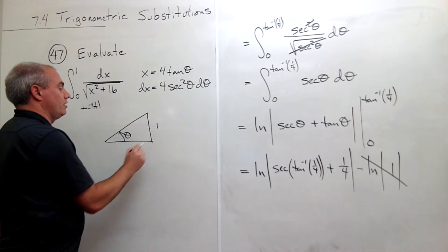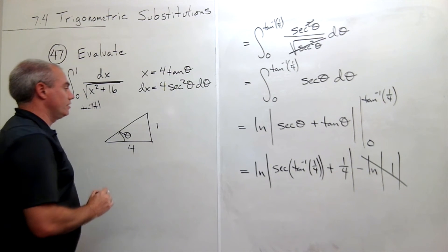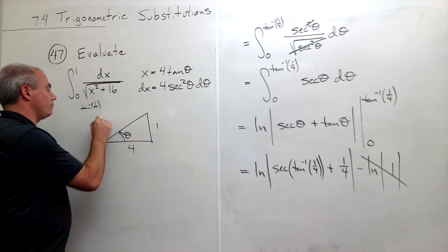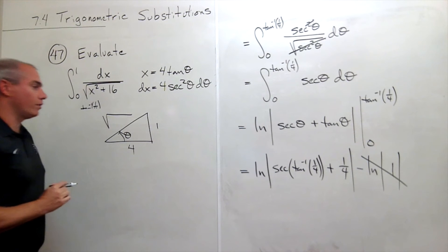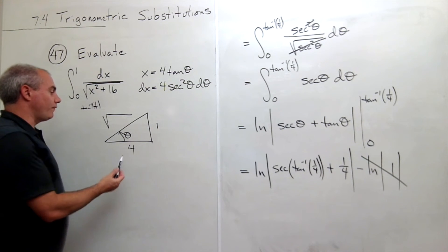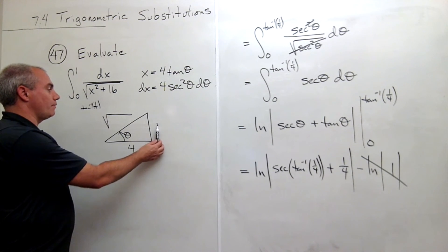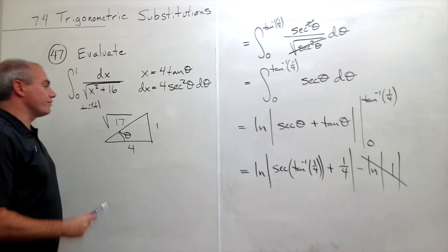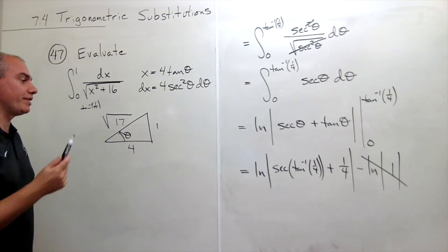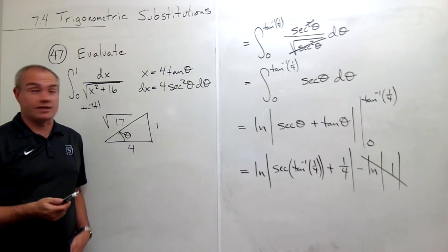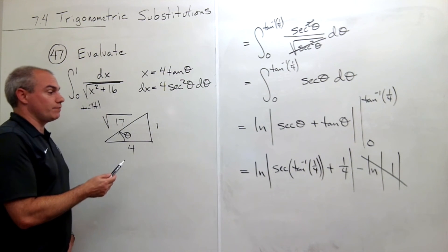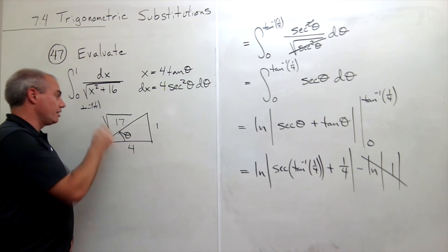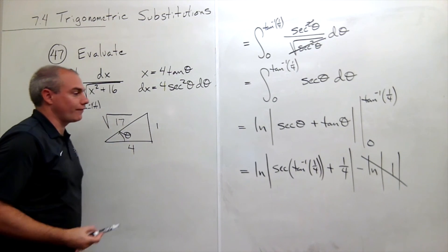Well, tangent is the opposite over the adjacent, and what does that mean for this side? That this side would be the square root of what? Well, it would be the square root of 4 squared plus 1 squared, or 17. So that's the square root of 17, and if I want to know what the secant of that angle is, then the secant of that angle is going to be the hypotenuse over the adjacent. So it's the square root of 17 over 4.